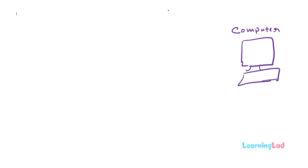A computer is a general purpose machine which can perform many computational tasks. The modern day computers that we have can perform billions or trillions of calculations within a fraction of a second.